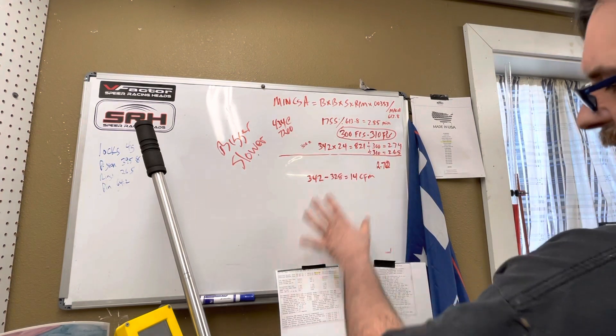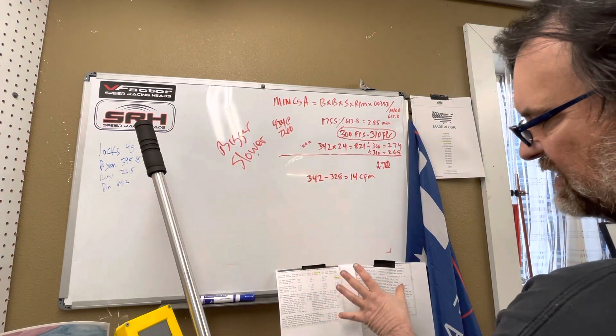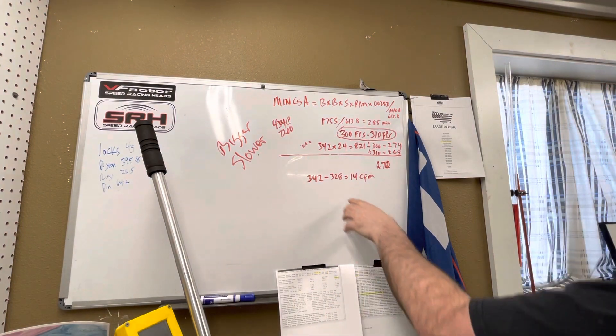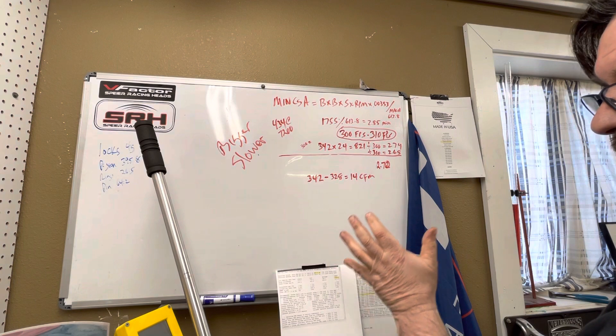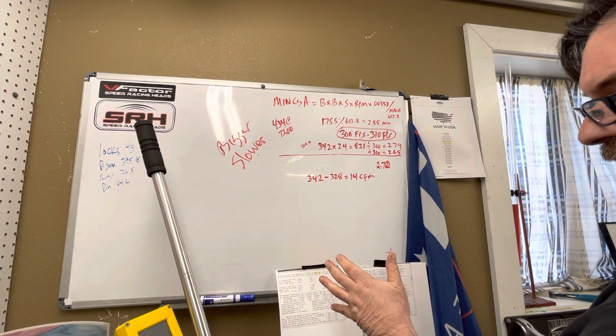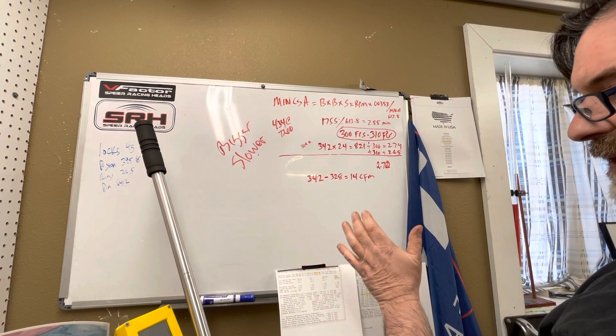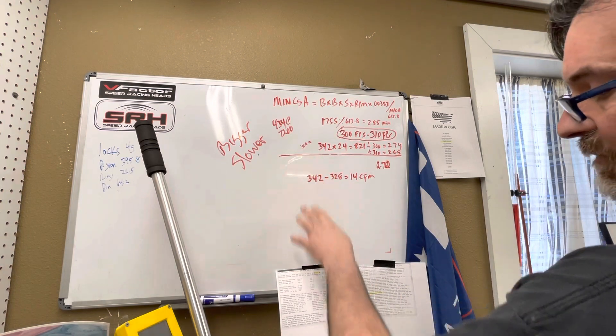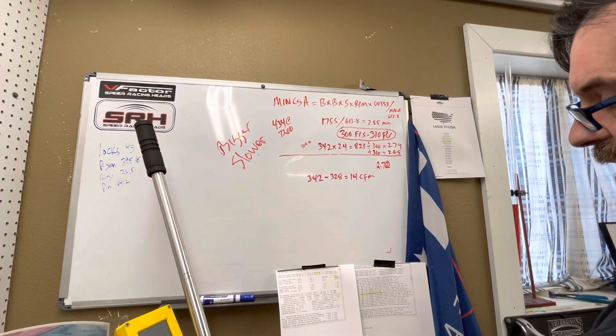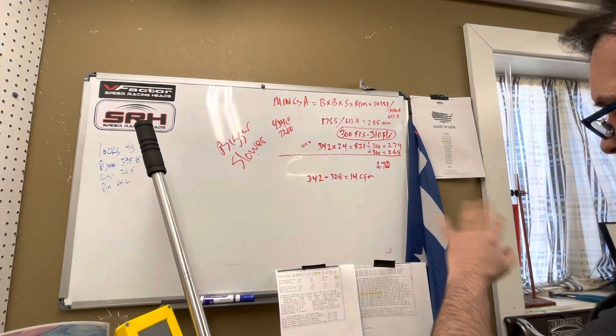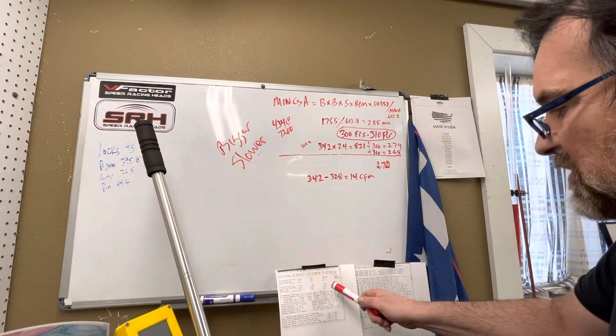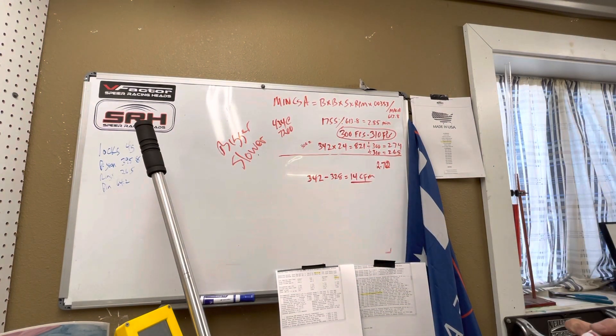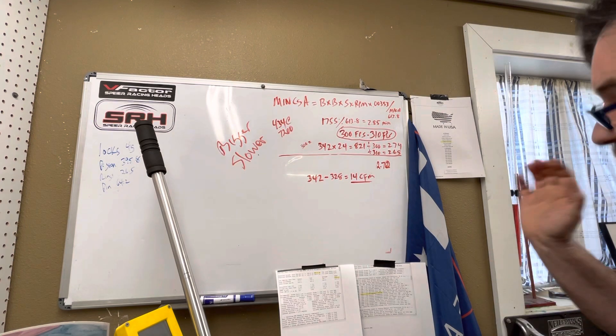The sheets that I ran off are for 434 at 7200. It's telling me that I need 328 CFM through the intake, without the intake and carburetor. The head flows 342, needs 328, that leaves 14 CFM for the manifold and carburetor, which is about right with a ported manifold.